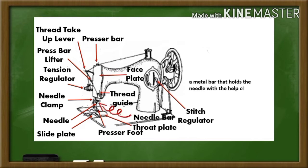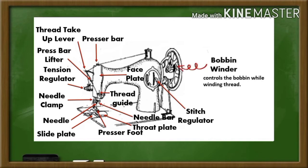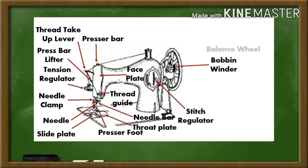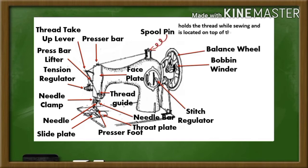Needle bar. A metal bar that holds the needle with the help of the needle clamp. Thread guide bar. It holds the thread while sewing and is located on top of the machine.